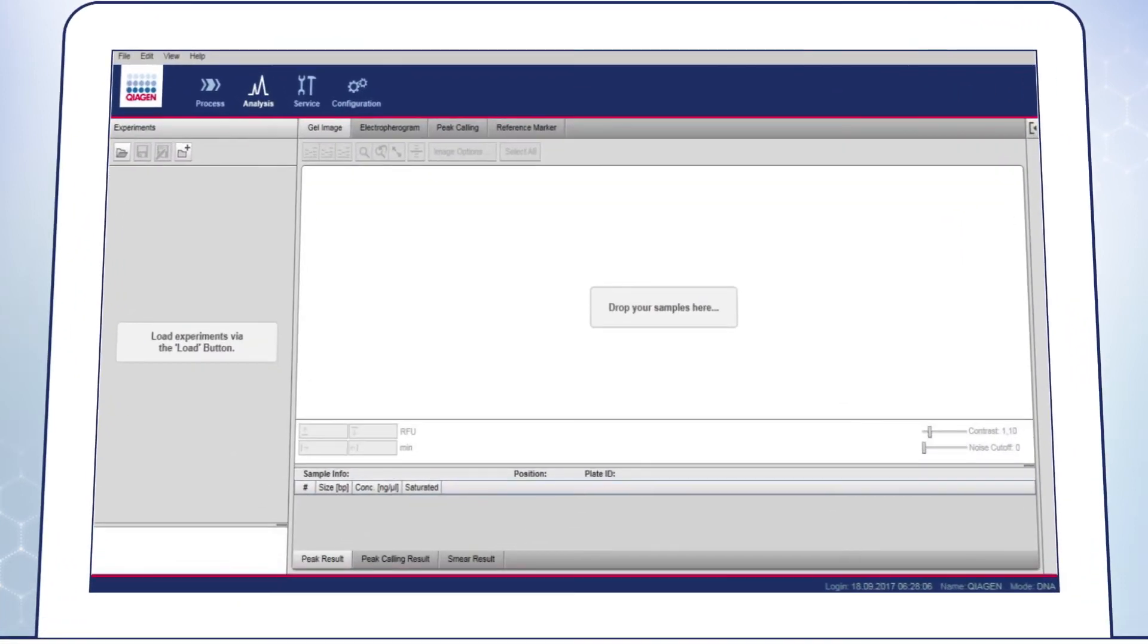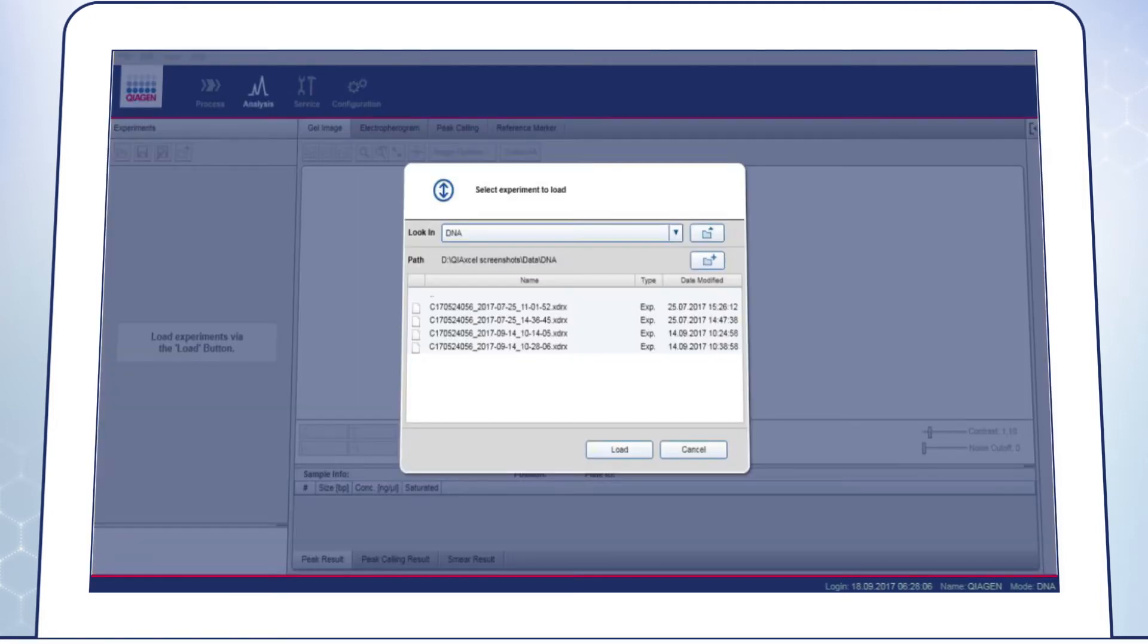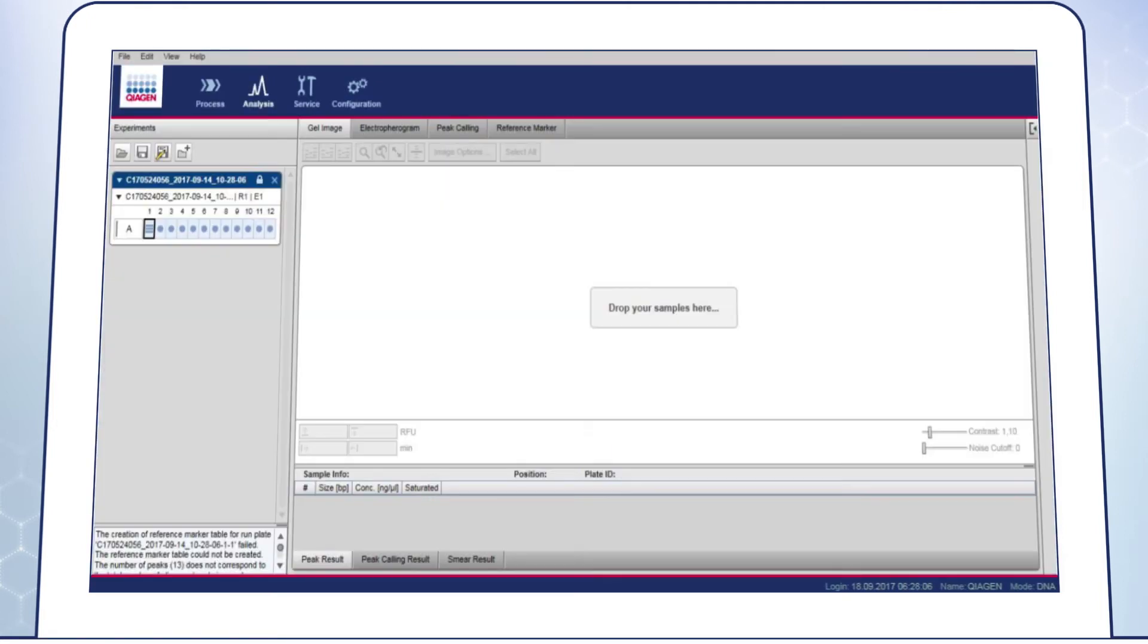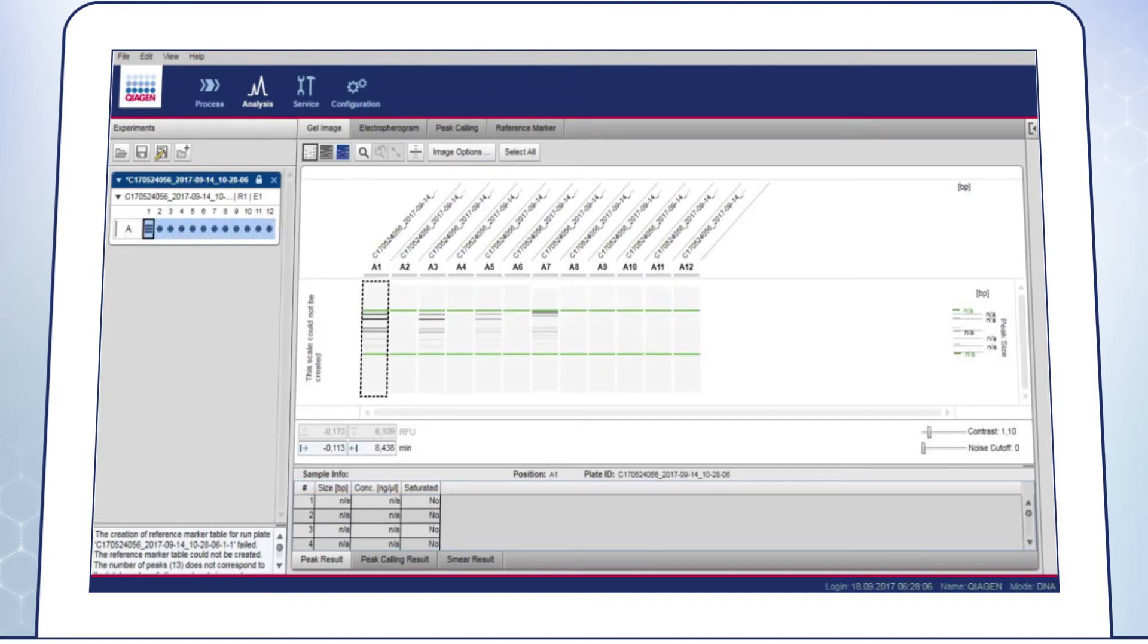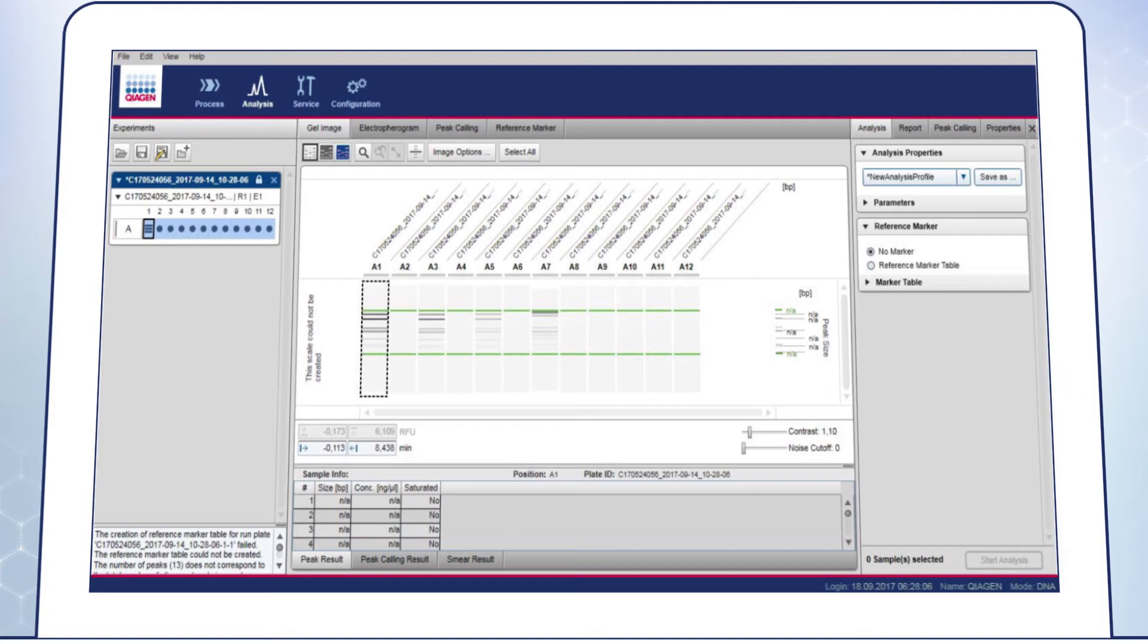To analyze the data, go to the Analysis environment and click on Load Experiment button to select and load the data. To visualize the samples on the gel image, select the positions in the left overview, right click and select Visualize Selected Samples. You can also drag and drop samples into the gel image overview. The samples can then be seen in the gel image. By clicking the arrow on the right, more detailed information on the analysis, report export and peak calling profile can be found.